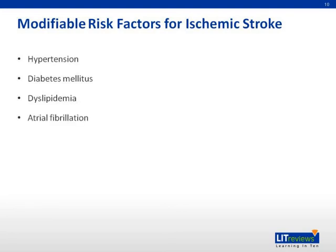Atrial fibrillation, the most common cause of cardioembolic stroke, increases ischemic stroke risk by approximately four to five times. Acute myocardial infarction is also associated with a 5% increased risk of ischemic stroke within the first two weeks of the event, with an increased risk of 12% if complicated by the presence of an LV thrombus.